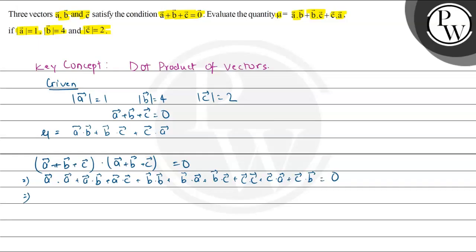We take the self-dot terms — a·a, b·b, and c·c — on one side. The remaining terms give twice of (a·b + b·c + c·a), because a·b = b·a by symmetry, and similarly for the other pairs. The right-hand side is 0.